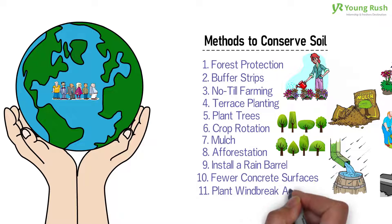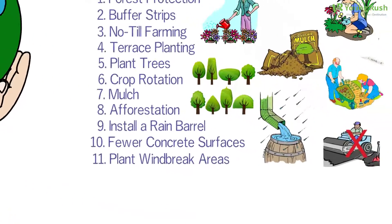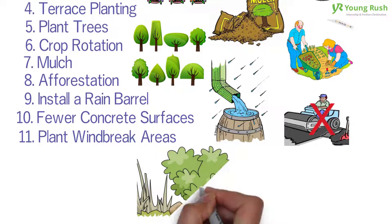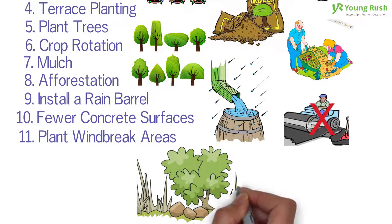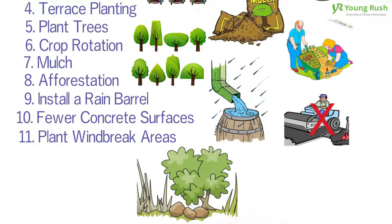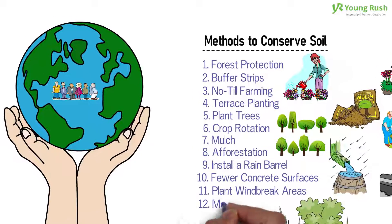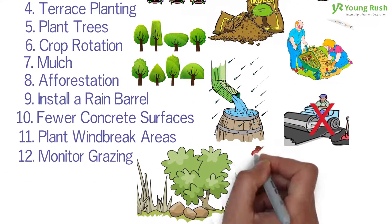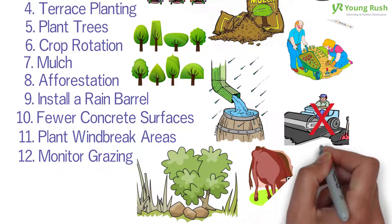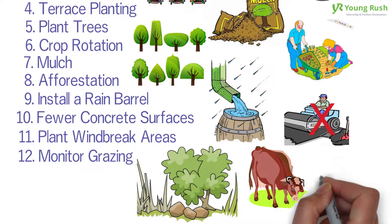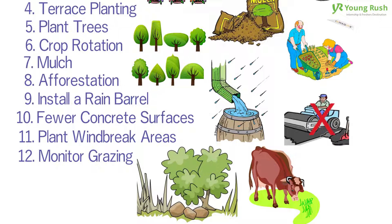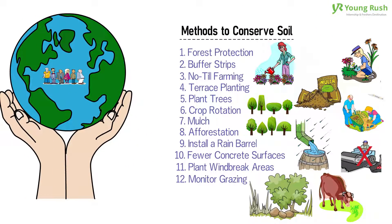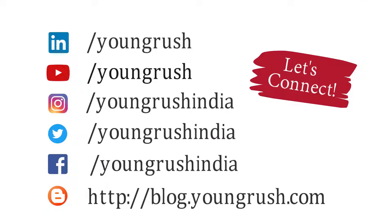11. Plant windbreak areas. Windbreaks are composed of shrubs, plants, and trees. This method slows down the force of wind over ground areas and prevents erosion of soil. 12. Monitor grazing. Farmers in different industries can play a critical role in conserving soil. Monitoring the areas that cows and other animals graze is important. This helps to prevent the depletion of the soil.